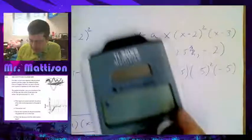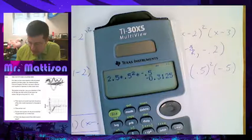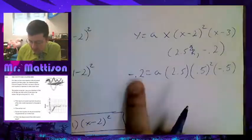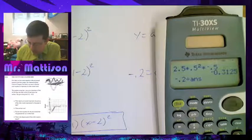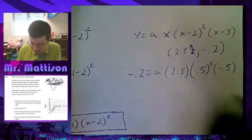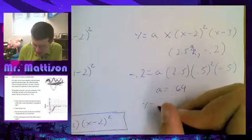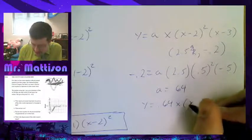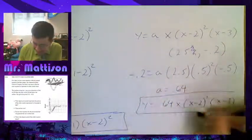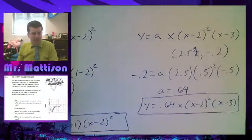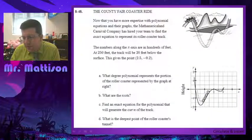Now, the point that it tells me I have to go through is the point 2.5, negative 0.2. So, putting all that in, I get negative 0.2 equals a times 2.5 times 2.5 minus 2 is just 0.5 squared times 2.5 minus 3 is negative 0.5. So, if I do all of this out, I'm going to get 2.5 times 0.5 squared times negative 0.5, and I'm getting negative 0.3125. Divide that over. So, negative 0.2 divided by that negative 0.3125, and I get 0.64 for a. So, now that I know a, plug it in. y equals 0.64 x times x minus 2 squared times x minus 3. And there we go. It's kind of ugly because we're dealing with decimals here, but not too bad.